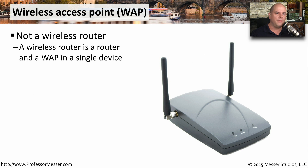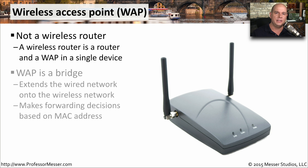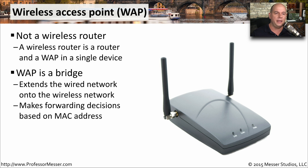Inside of our small offices or our homes, we probably have a wireless router. Inside of that wireless router is the wireless access point functionality. This WAP, or wireless access point, is effectively a bridge that connects everybody on this wireless network to the wired ethernet network. It makes its forwarding decisions very similar to a switch — it looks at the destination MAC address and sends information intelligently out to the wireless network or into the wired network.